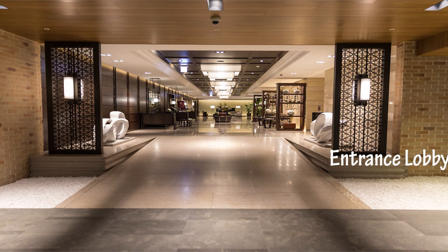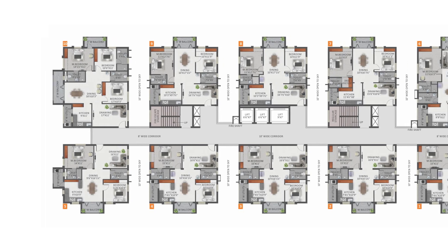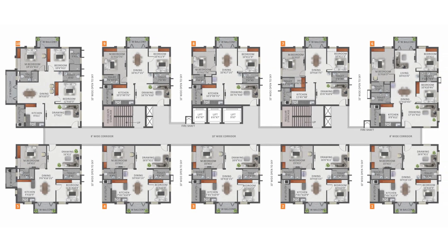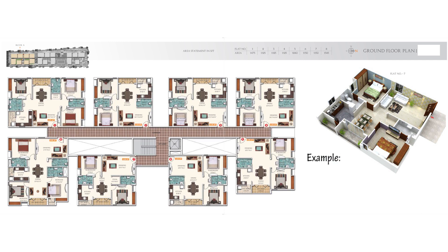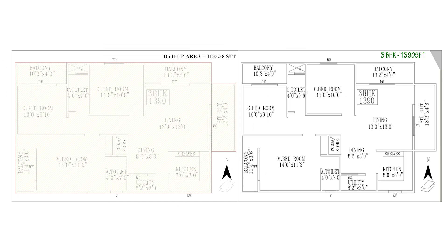In an apartment, common areas include corridors, stairs, lifts, lift lobby, shafts, clubhouse, headrooms, entrance lobby, etc. These are components used by all flat owners in the apartment. In this case, all eight flat owners will be using this area. Adding all these component areas and distributing them to individual flats on a percentage basis is termed as common area.